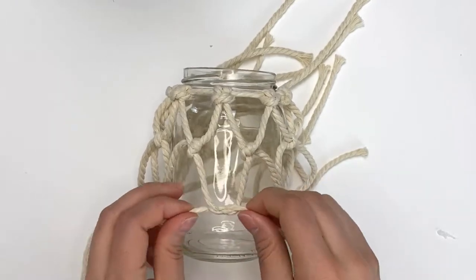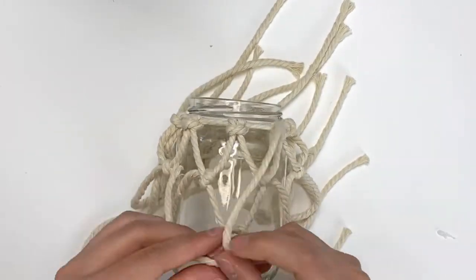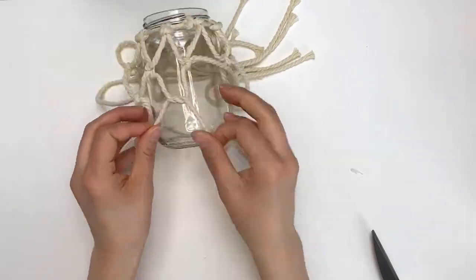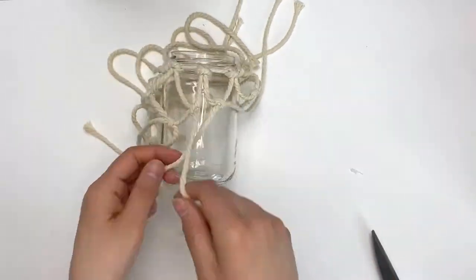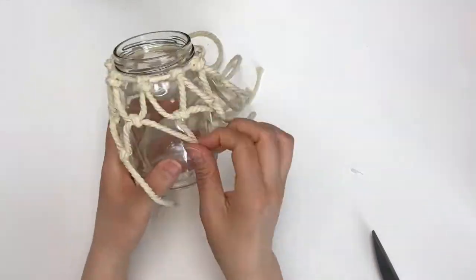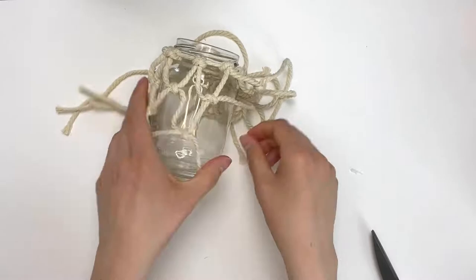Once you've gone all the way around, you're going to essentially do the same thing. So you're going to grab one strand from each of the little knots and then create another two knots a little bit lower on the jar, creating a diamond shape. And then you're going to continue doing the same thing around your jar, and then once you're done that round you're going to start another one. And I'm just going to let this footage roll so you can see how I did this.